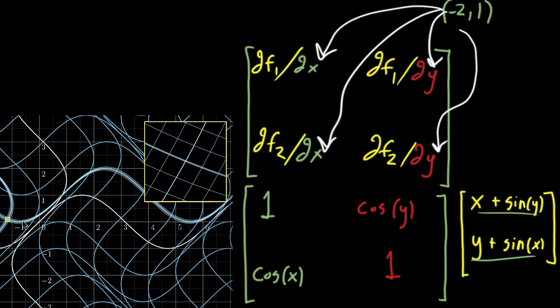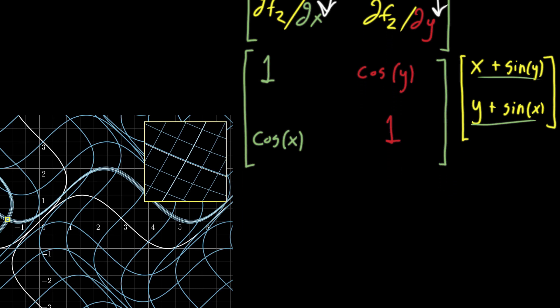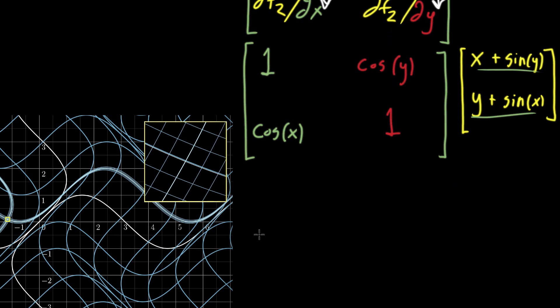But if we want to understand what happens around the specific point that started off at, well I think I recorded it here, at negative 2, 1, we plug that into each one of these values. So when we plug in negative 2, 1, so go ahead and just kind of, again, rewrite it to remember. We're plugging in negative 2, 1 as our specific point.